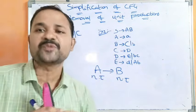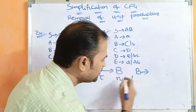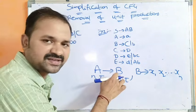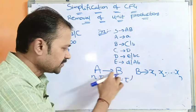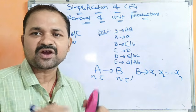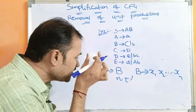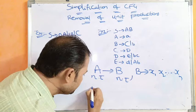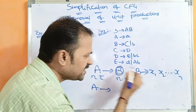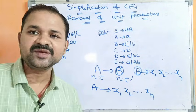Let us see how to remove unit productions. Suppose we have two productions: the first is A produces B, and the second is B produces X1, X2, so on, Xn. Here the first production ends with B and the second production starts with B. X1, X2, ..., Xn are combinations of non-terminals, terminals, or both. Then, in order to eliminate A produces B, we replace it with A produces X1, X2, ..., Xn. In this way, we can eliminate a unit production.